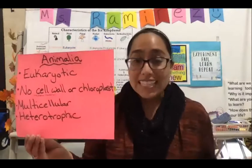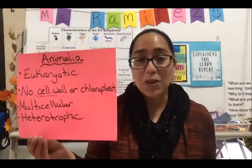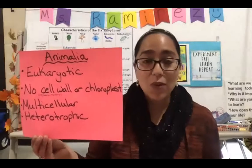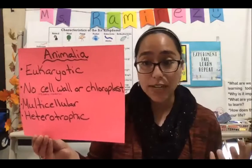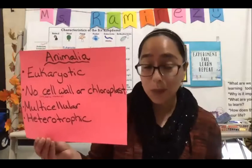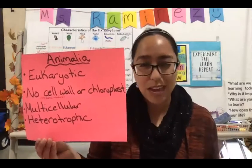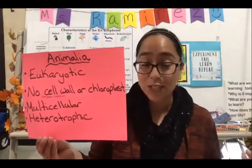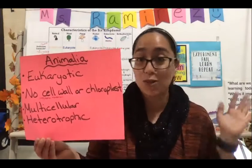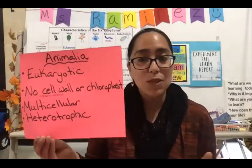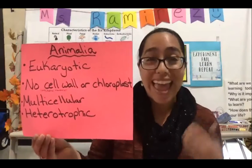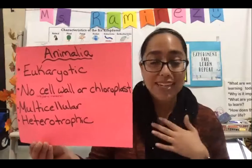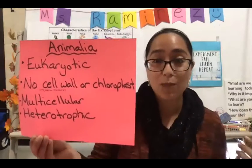The first kingdom we're going to look at is Animalia. As its name suggests, Animalia includes animals. They are eukaryotic — these organisms have a nucleus that houses their DNA. The cells of these organisms do not have a cell wall and there's no chloroplast. Plants and autotrophic organisms typically have a chloroplast for photosynthesis, but animals don't undergo photosynthesis, so there's no chloroplast in our cells. Animals are multicellular — we are complex organisms made out of many cells — and of course we are heterotrophic, so we cannot make our own energy and have to eat other plants or animals.